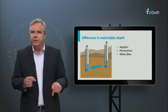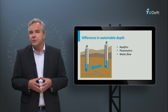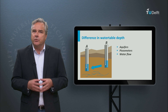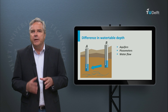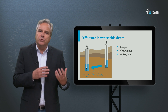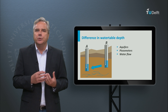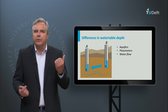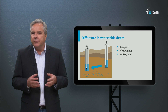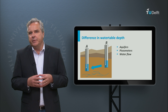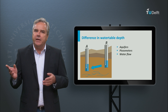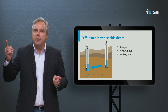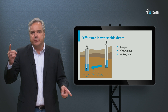The water table depth is defined as the level at which the pressure in the groundwater is equal to the atmospheric pressure. When you go deeper into the groundwater, the pressure increases just as it does in a swimming pool. At any point you could insert a groundwater tube that is open at the bottom and closed at the sides. The water would rise into the tube until the pressure at the bottom equals the pressure of the surrounding groundwater. The water level in this tube is called the piezometric level. When the piezometric levels between two points differ, water will flow from the higher piezometric level to the lower piezometric level.